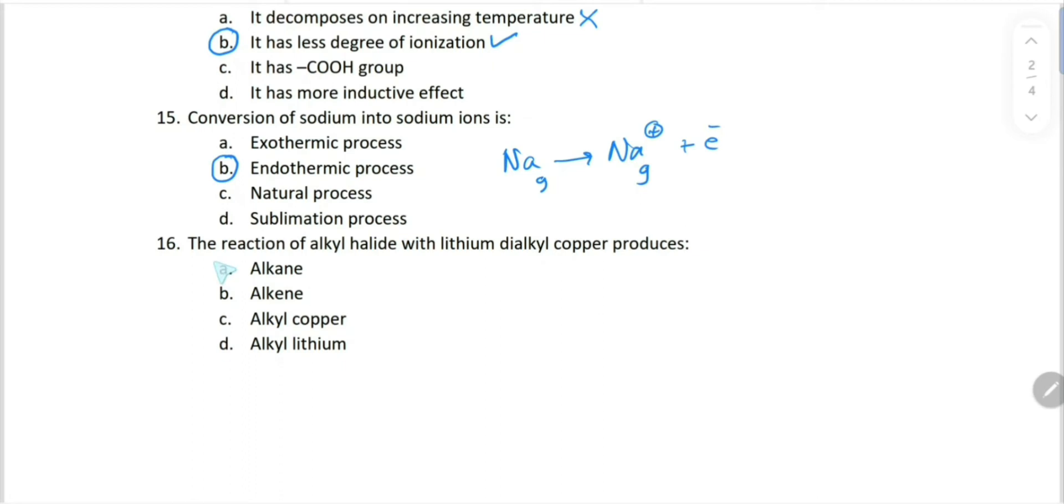The reaction of alkyl halide with lithium dialkyl copper produces... lithium dialkyl R2CuLi - this is known as Gilman's reagent. And when this reaction occurs with alkyl halide, coupling of alkyl halide occurs, forming alkanes. This is also called the Corey-House reaction. So alkanes are produced in this reaction.